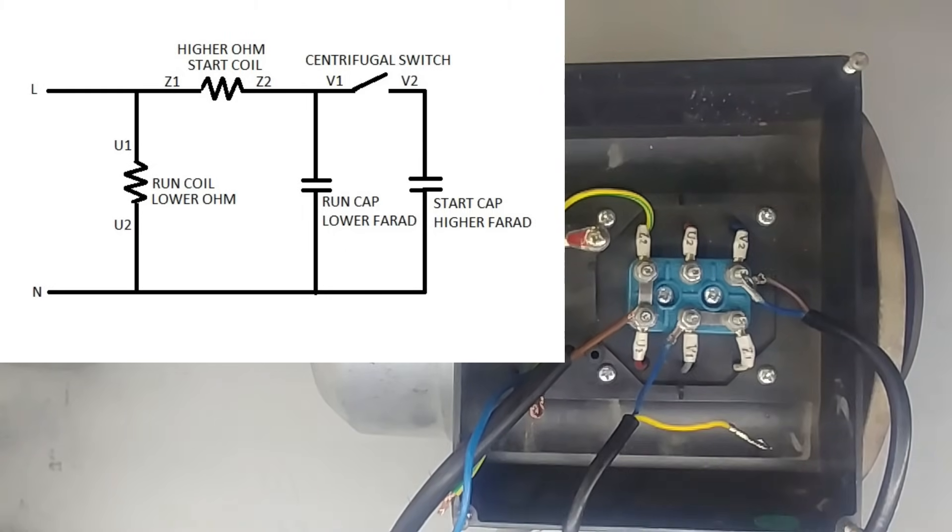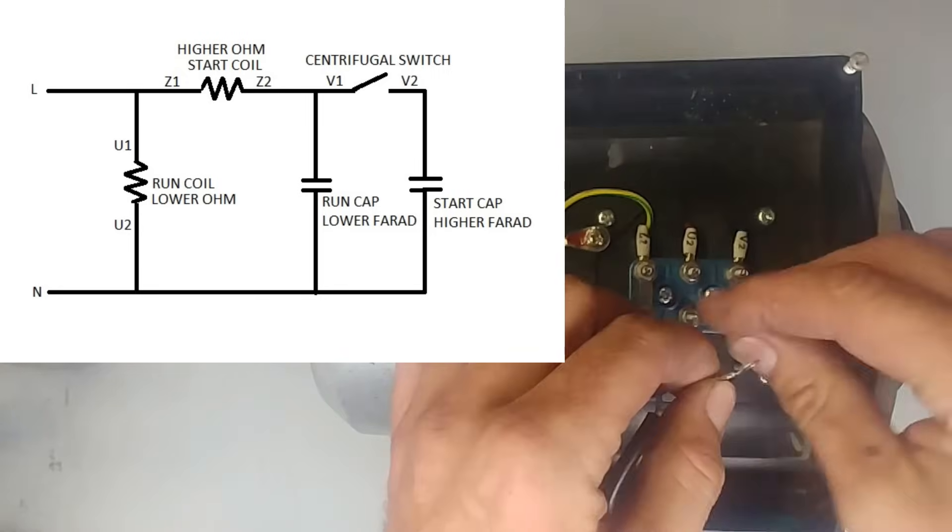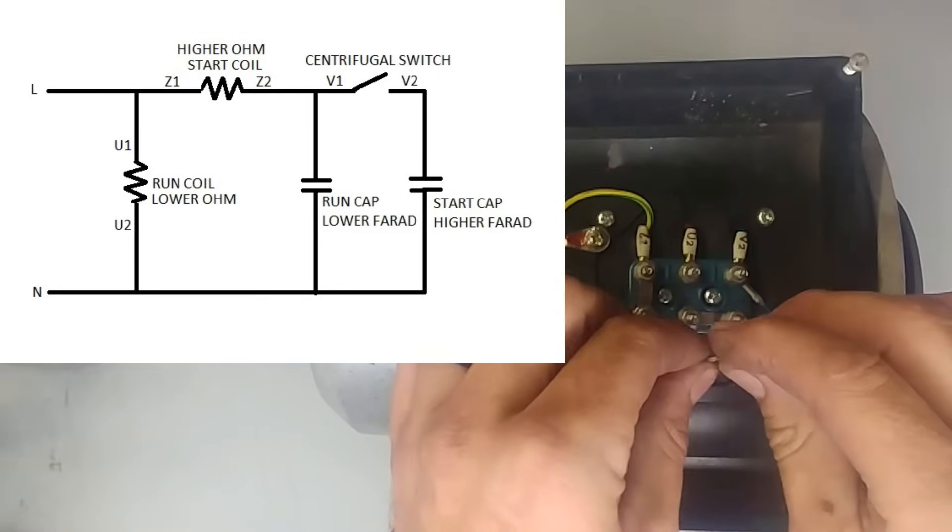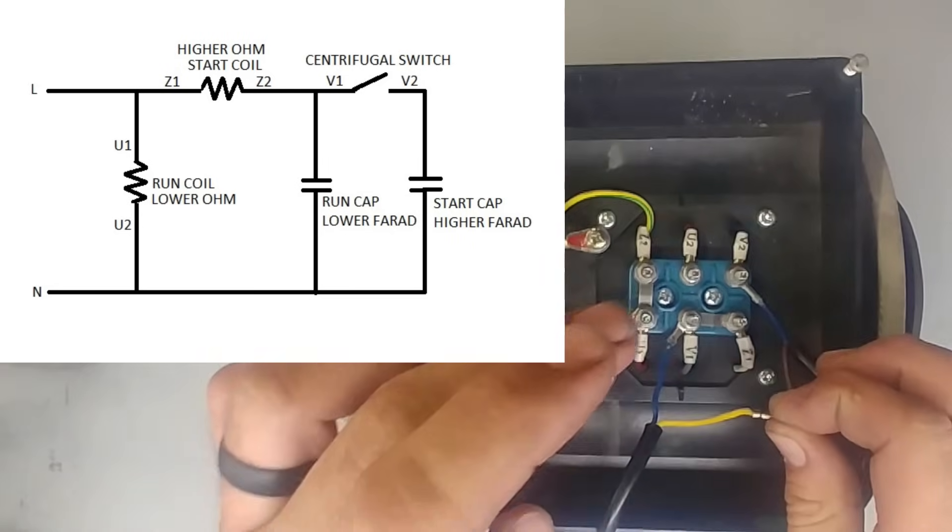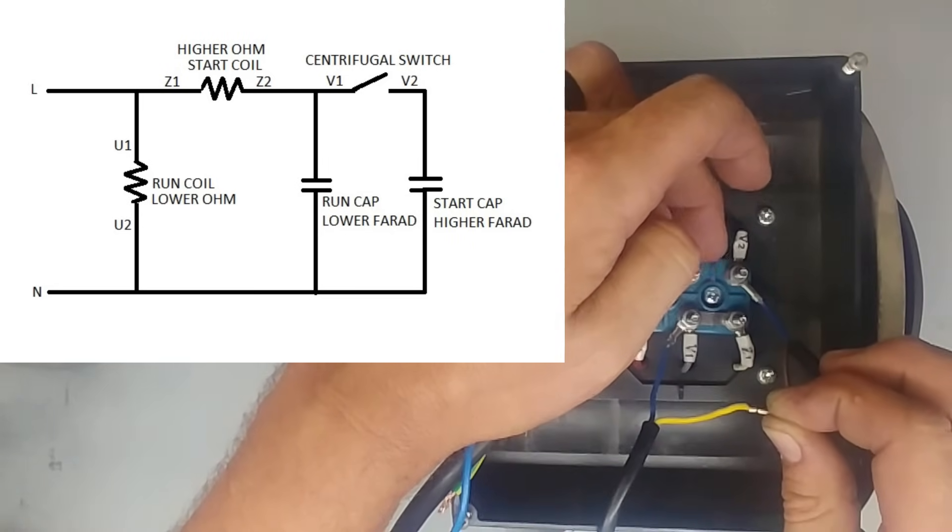Now the other side of my start capacitor, run capacitor and my running coil which is U. So the other side of U is going to be connected to each other and to neutral.